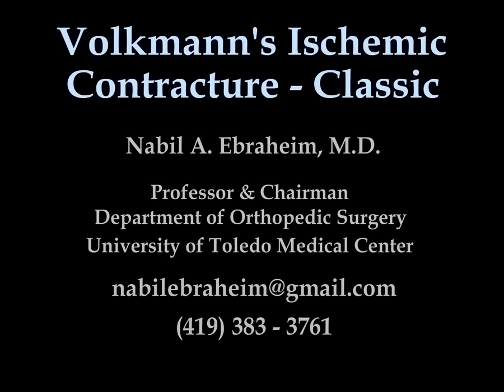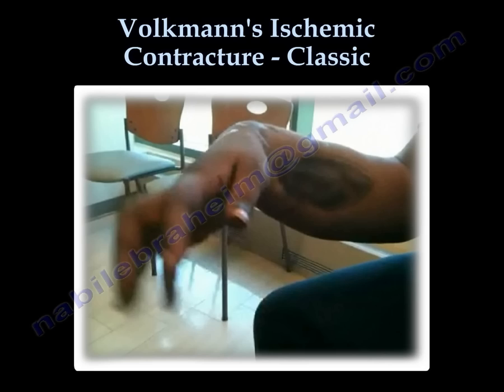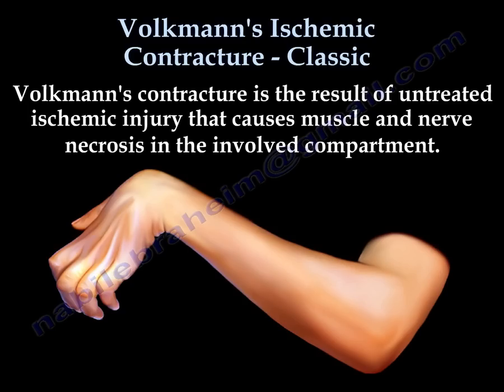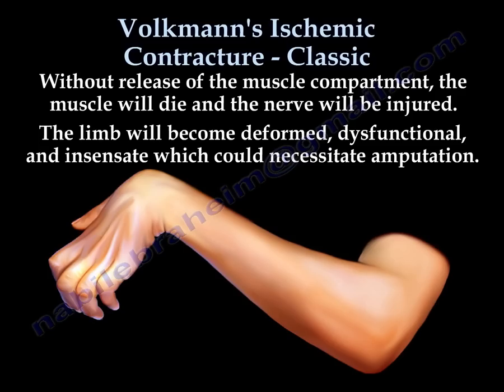Volkman's ischemic contracture is the result of untreated ischemic injury that causes muscle and nerve damage and necrosis in the involved compartment. Without release of the muscle compartment, the muscle will die, the nerve will be injured, and the limb will become deformed, dysfunctional, insensate, and may need an amputation.